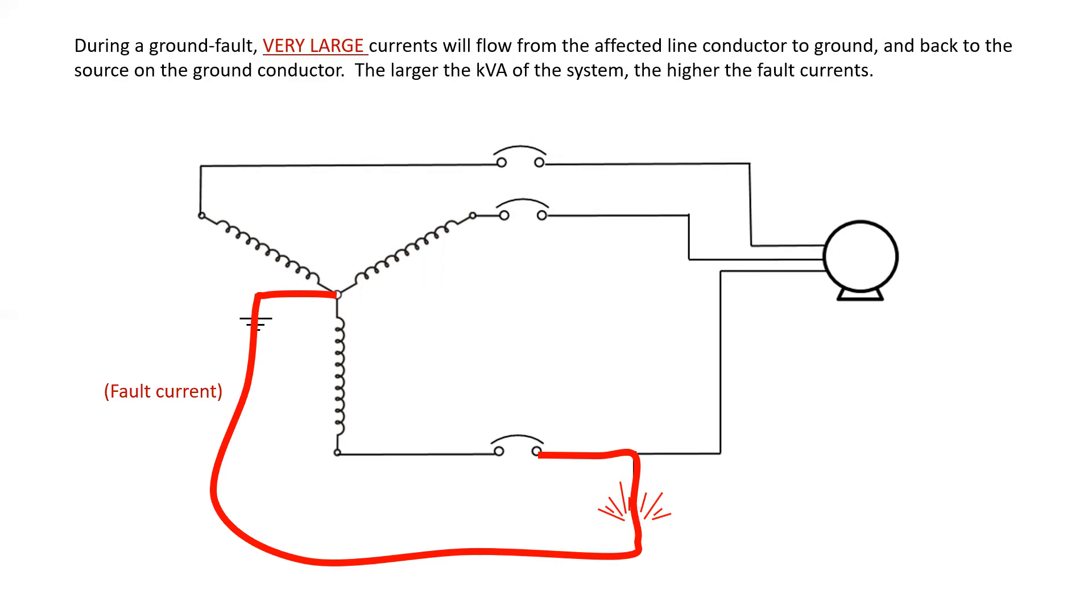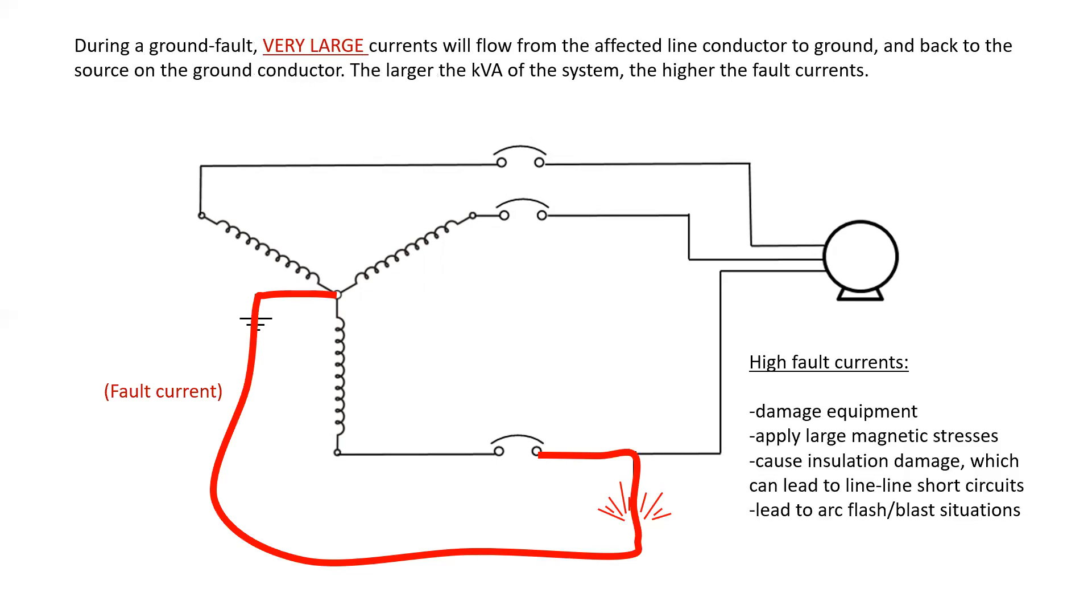The larger the kVA of the system, however, the higher the fault current values will be. And even though the breaker will trip, we're still going to result in some damage to equipment, and that can sometimes be in the form of thermal damage or in magnetic stress damage by bending and warping of equipment due to the current. We can also have insulation damage, which can lead to line-to-line short circuits and arc flash or arc blast situations.